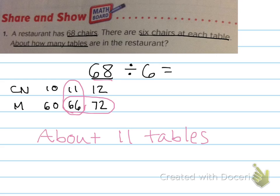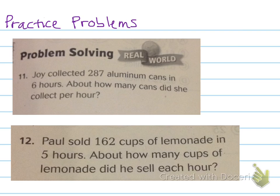So, if you need to go back through and watch the steps, go for it, right? Remember, first step, listing counting numbers and the multiples. Find the multiple that's closest to your dividend. And then look at the counting number, right? That's your estimate for your quotient. All right. Here are your practice problems. Only two of them. Joy collected 287 aluminum cans in six hours. About how many cans did she collect per hour? And then the second problem. Paul sold 162 cups of lemonade in five hours. About how many cups of lemonade did he sell each hour? Again, use those steps. Use counting numbers and multiples to estimate those quotients. Have a good night.